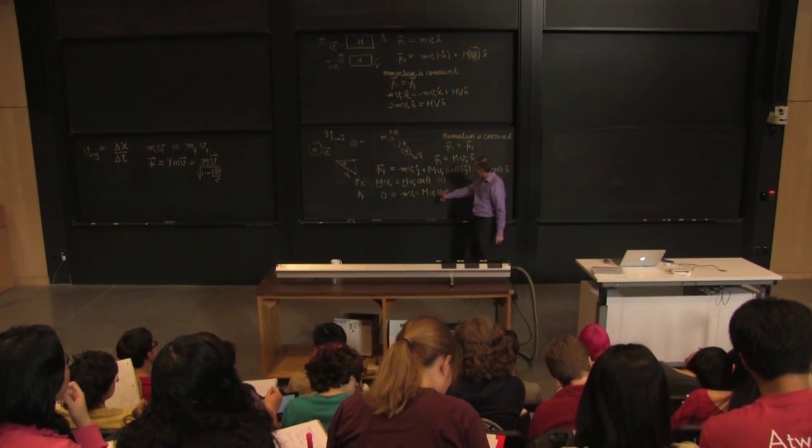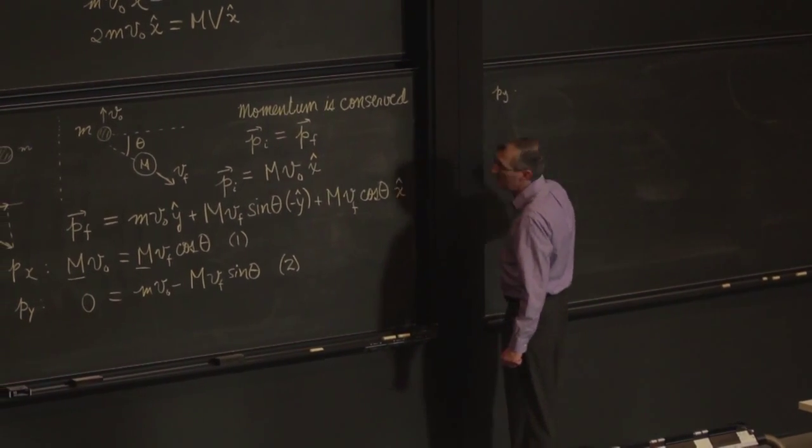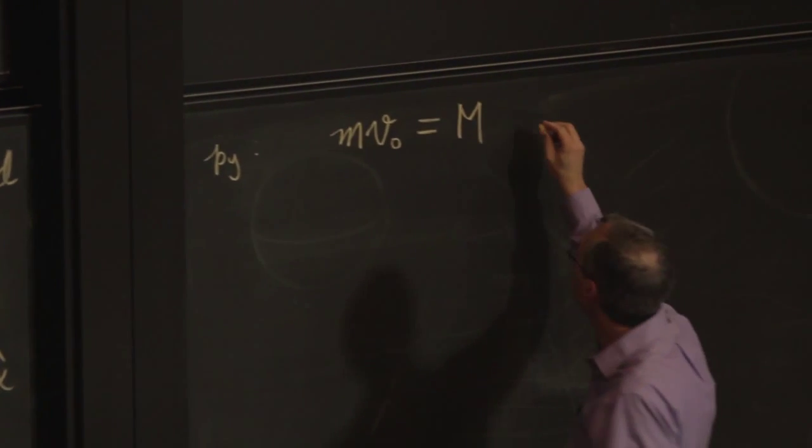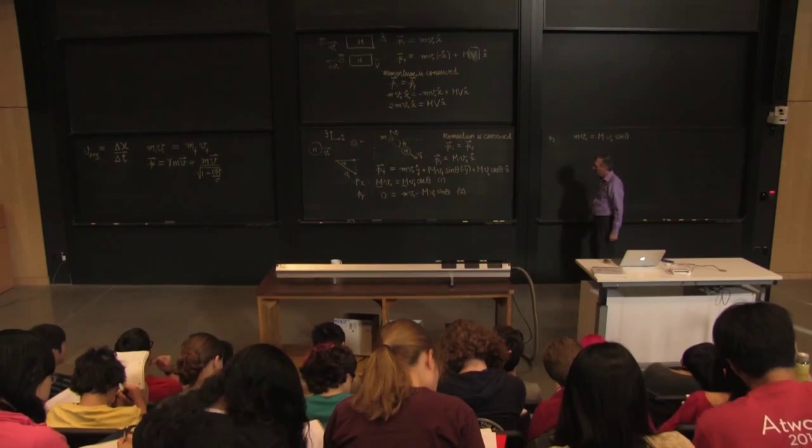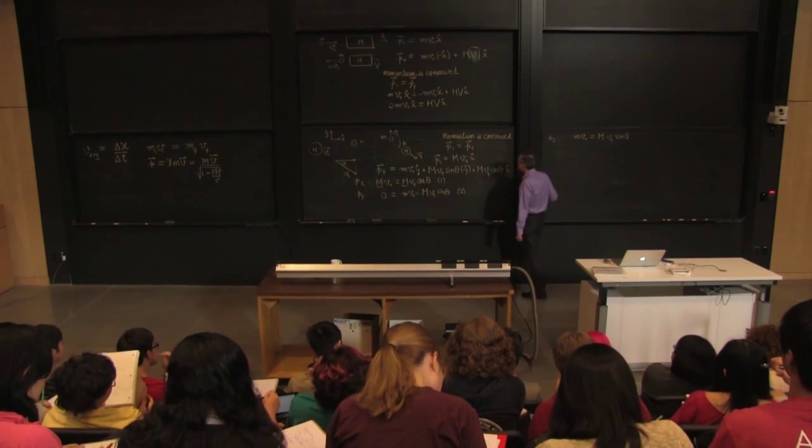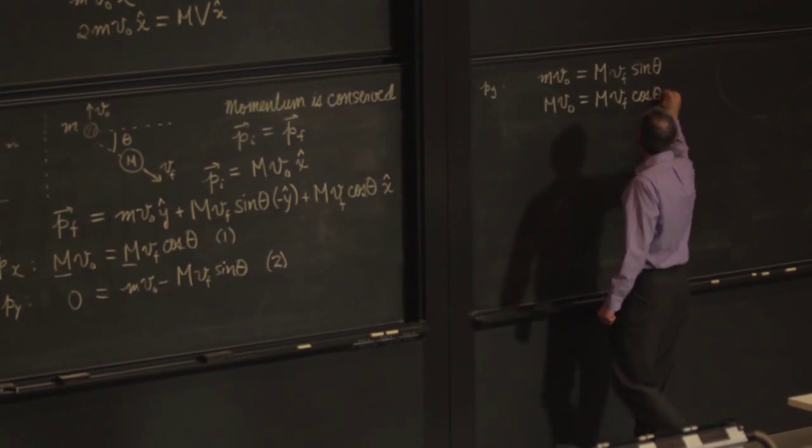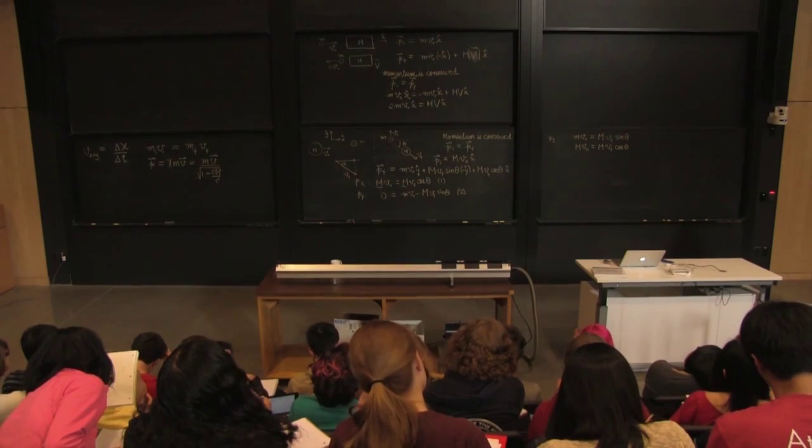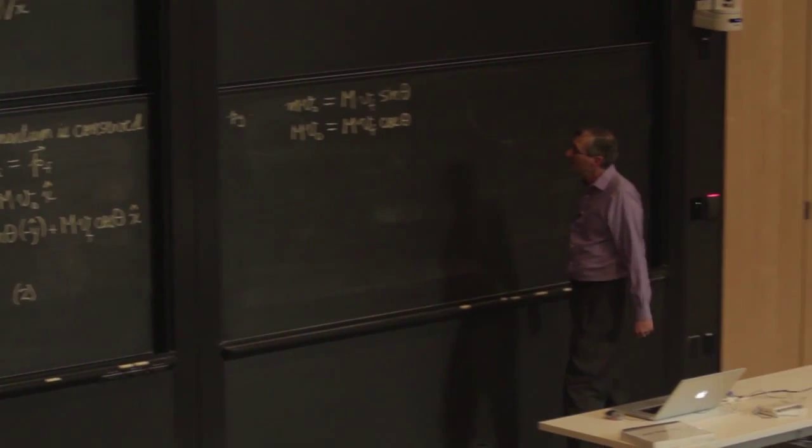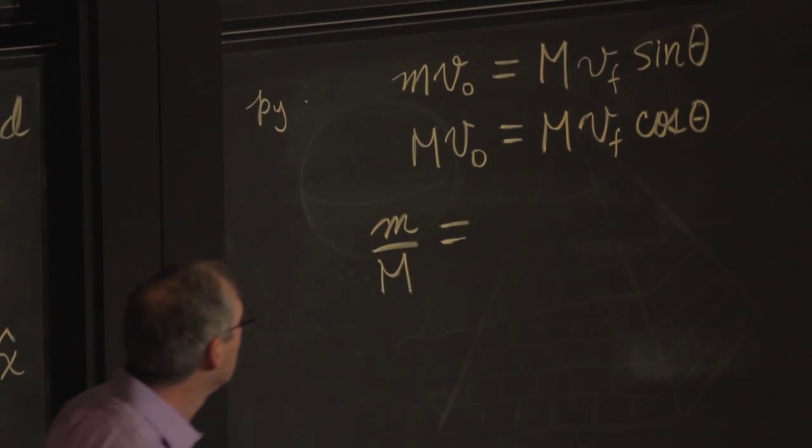In practice, I think I want to slide this to the opposite side. I want to rewrite the y equation in the form M v naught is equal to big M v final sine theta. Why do I want to do that? Well, I'm noticing that on the right-hand side, on this equation, that is equation number 1, I have a lot of common factors. So if I were to divide these two equations, I could get rid of v final. And if I do that, I get M over M is equal to sine over cosine, that's the tangent.